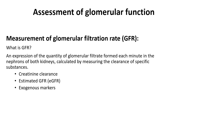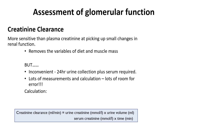In more detail about glomerular filtration rate: this is an expression of the quantity of glomerular filtrate formed each minute in the nephrons of both kidneys, calculated by measuring the clearance of specific substances — creatinine clearance, estimated GFR, and exogenous markers. Creatinine clearance is more sensitive than plasma creatinine at picking up small changes in renal function and removes the variables of diet and muscle mass, but it is inconvenient because a 24-hour urine collection plus serum sample is required, with many measurements and room for error. The calculation is: creatinine clearance = urine creatinine × urine volume ÷ (serum creatinine × time).